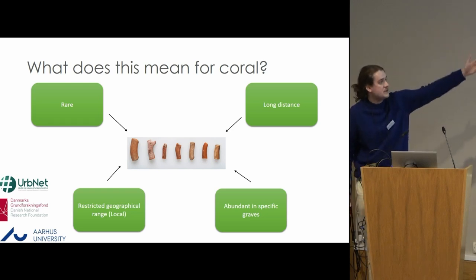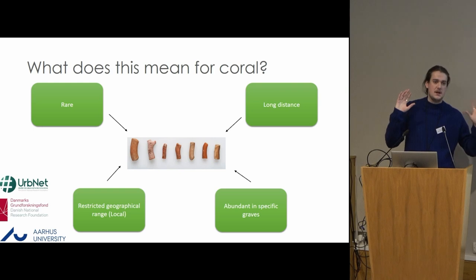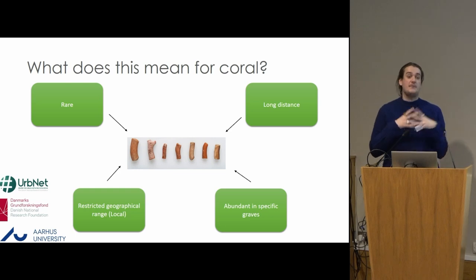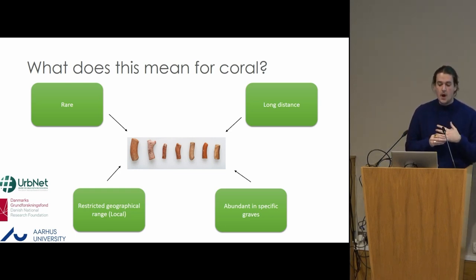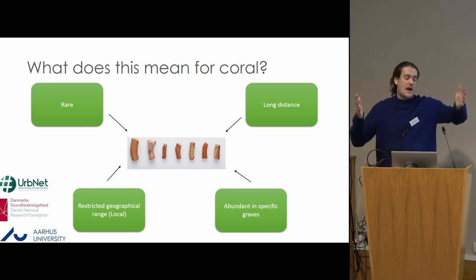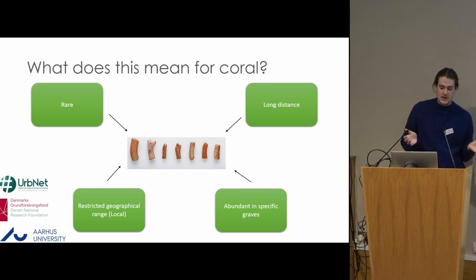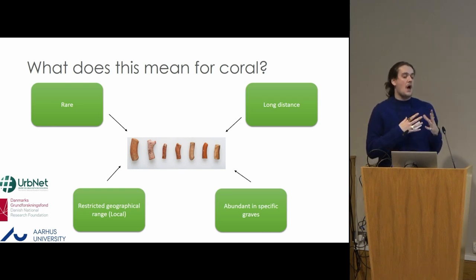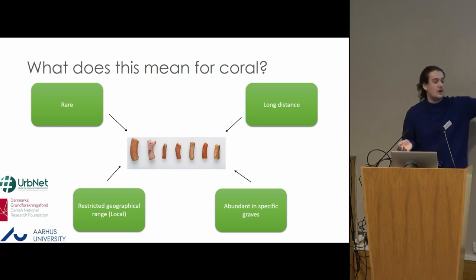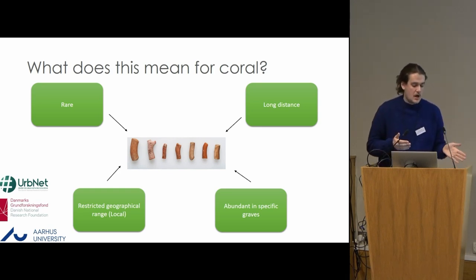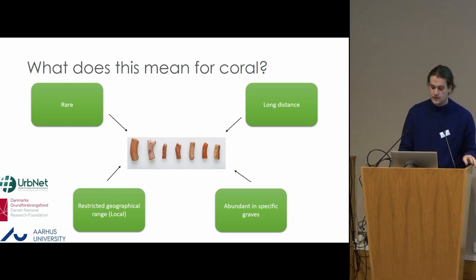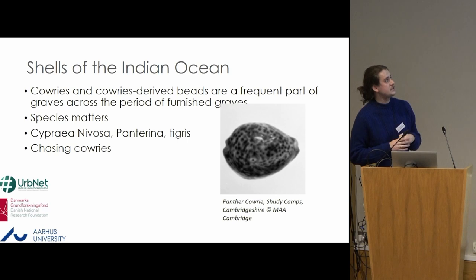Coral has this restricted geographic range — it comes from within a 10-mile radius in northern Lincolnshire — but it's abundant in very specific graves. Maybe that means specific people within a community are marked out by these objects. It's rare on a wider scale outside of this local context, so maybe it means something specifically local to these people — a marker of local status. But again it's long distance, and I think there are other things that come before this long-distance nature, whether these people knew it or not, that make it more important.